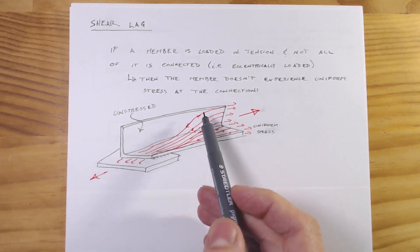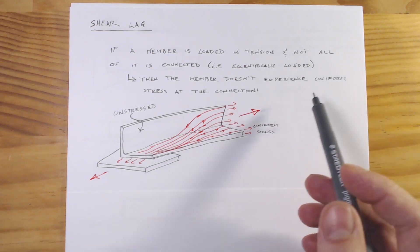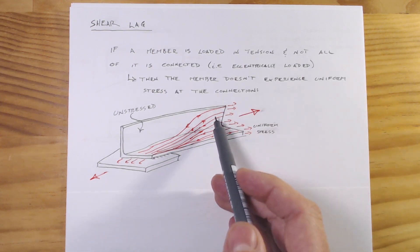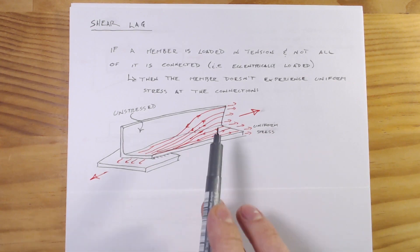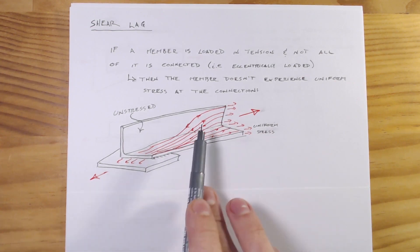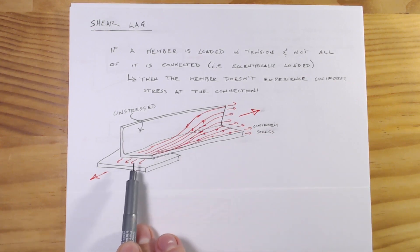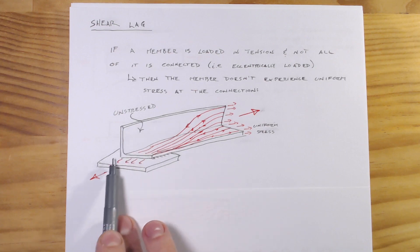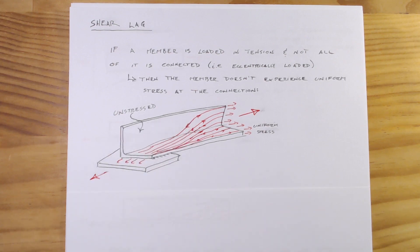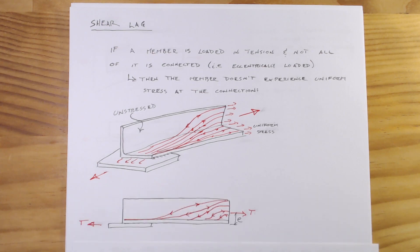What that means is as we get further and further out we'll have uniform stress across the section, but as we get to that connection all of that stress has to somehow get into this connection because these two forces have to be in equilibrium. What that means is you'll have a portion which is unstressed and essentially not getting used, and so we can't actually count on that for our ability to resist this tension load.